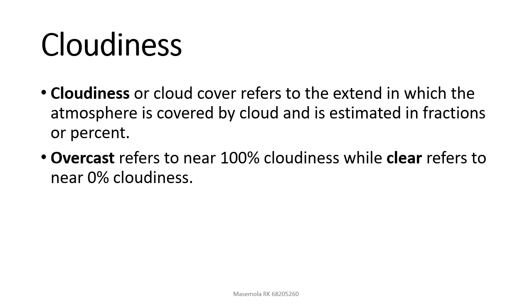Moving on to cloudiness — what is cloudiness? Cloudiness, or cloud cover, refers to the extent to which the atmosphere is covered by clouds, and it is estimated in fractions or percent. Overcast refers to near 100% cloudiness, while clear refers to near zero percent cloudiness. Some days the sky will just be cloudy and some days we'll see a clear sky.